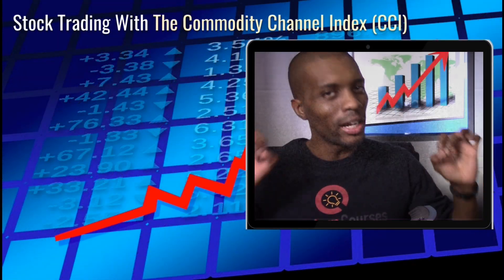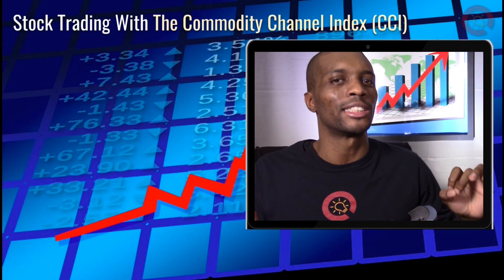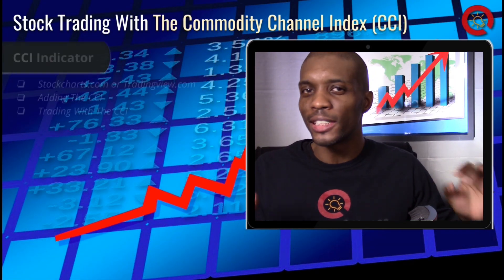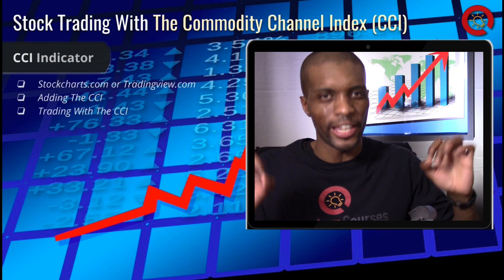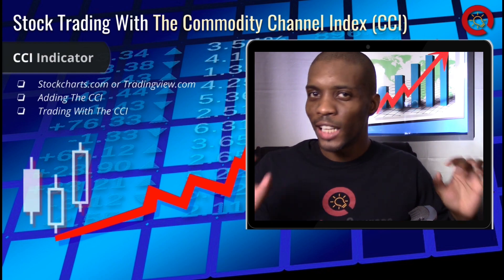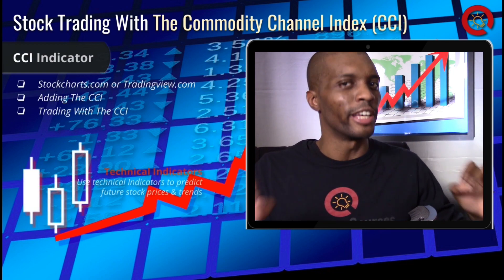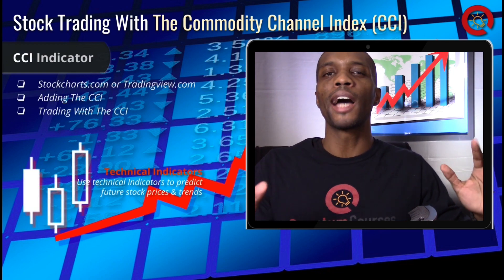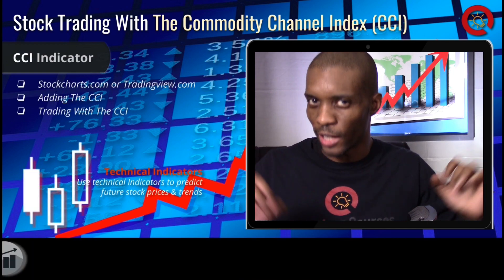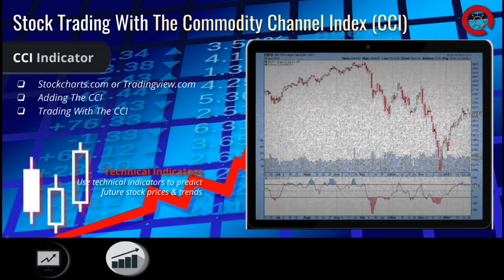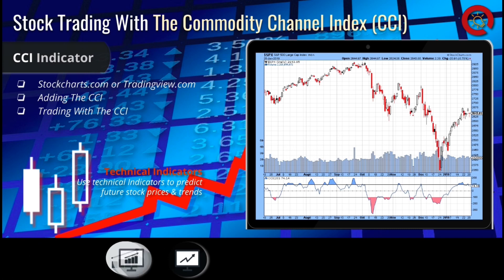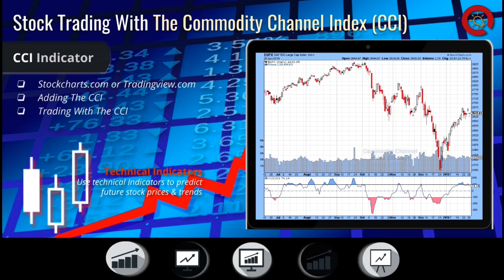Let's discuss the Commodity Channel Index, also known as the CCI indicator. The CCI is a momentum oscillator that can be used to identify trend cycles. The CCI indicator was originally developed for commodities, but can also be used for other assets that are traded as well.